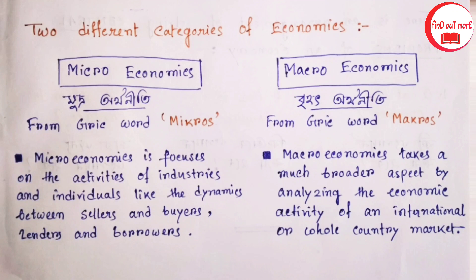Macroeconomics takes a much broader aspect by analyzing the economic activity of an international or whole country market. That means it looks at the overall economic activity, which is also the primary level. Macroeconomics is the next branch.